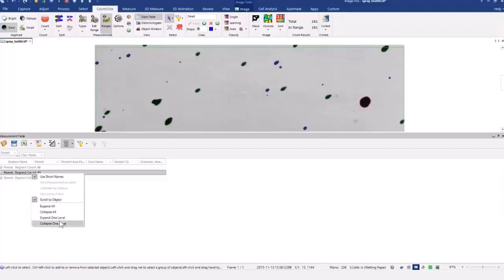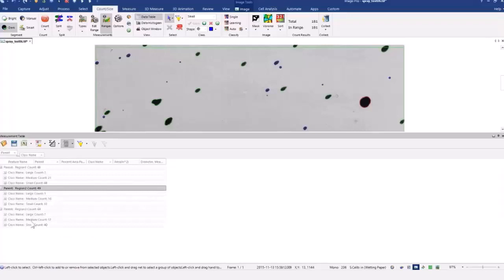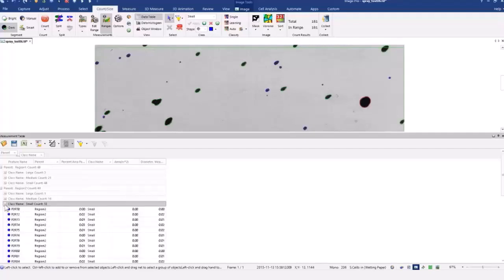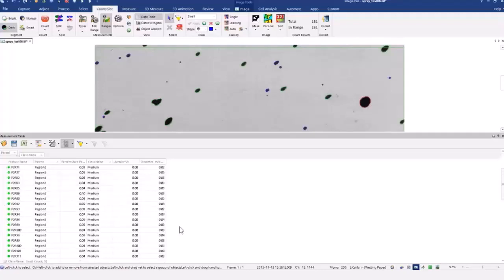If everyone's ever seen this part, I can collapse all by just simply right-clicking. And I can take region two, tells me how many objects are in. If I wanted to look at the data, I could say expand one level. And that will tell me, within that particular region, one large object, 16 medium, and 32 small. I can always look at the individual data within region two. So this is how you go about doing distribution analysis within parent regions under ImagePro10.